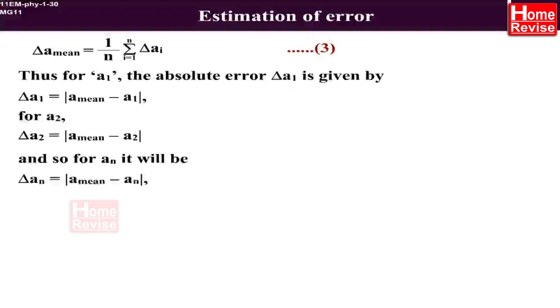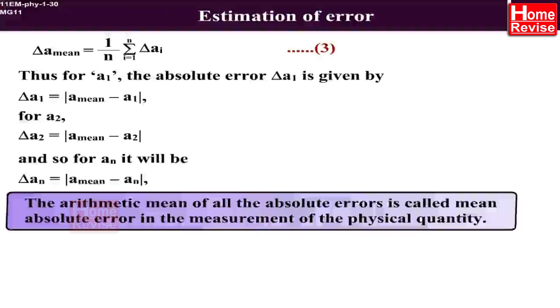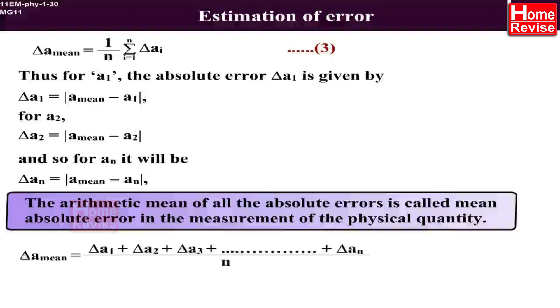Mean absolute error in the measurement of the physical quantity ΔA_mean is given by ΔA_mean is equal to ΔA1 plus ΔA2 plus so on till